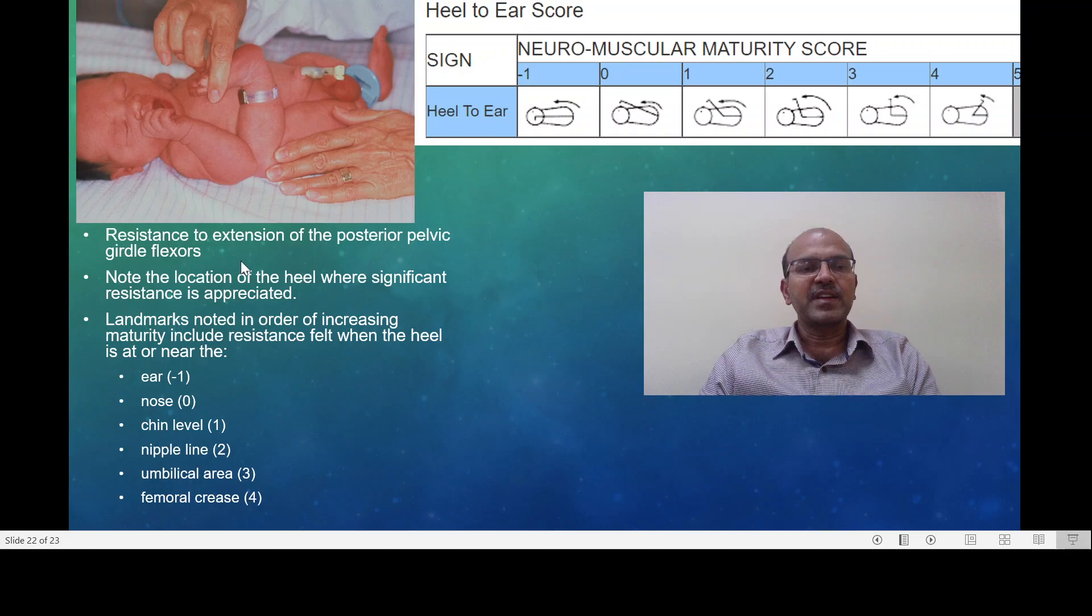The heel to ear measurement is degree of resistance to extension in the hip girdle and here the posterior pelvic girdle flexors are the ones which are resisting the extension. We should see where the heel reaches when there is significant resistance and these are the landmarks. So if it reaches up to the ear it's totally flexible so it's minus 1, if it reaches the nose it's 0, chin level is 1, nipple line is 2, umbilical area is 3 and femoral crease is 4. So you have different levels and according to the maturity it stops short.